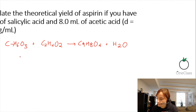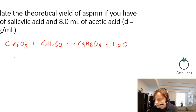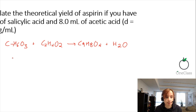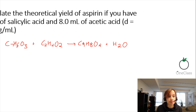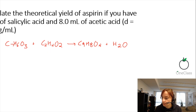Now, to figure out the theoretical yield, we need to determine which is the limiting reagent — whether we will run out of salicylic acid first or acetic acid. So we need to calculate the number of moles of each.